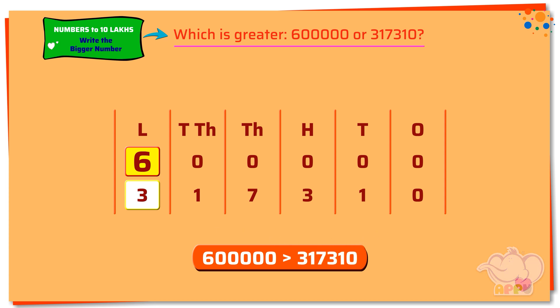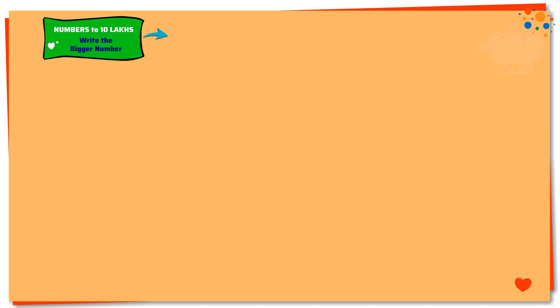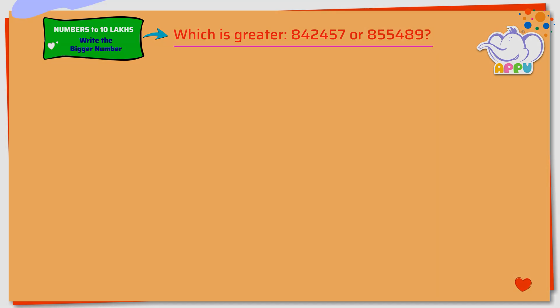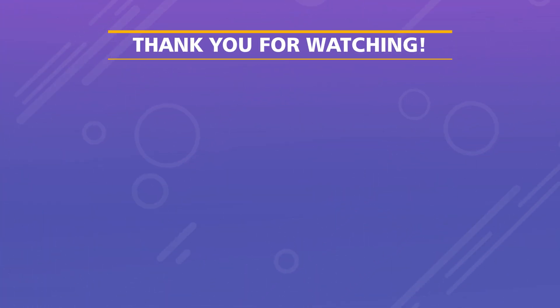Which is greater: eight four two four five seven, or eight five five four eight nine?